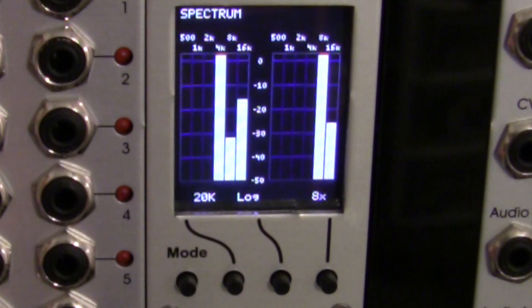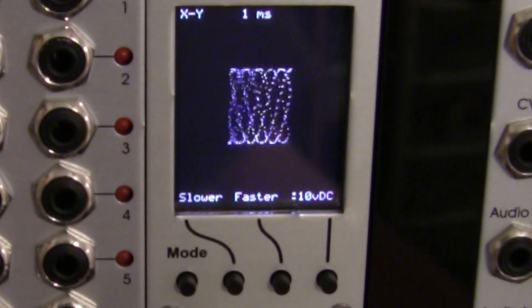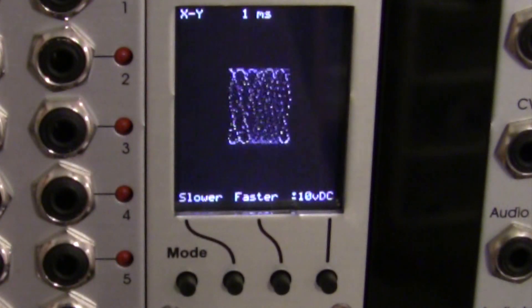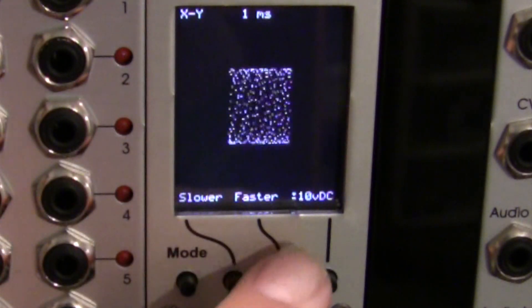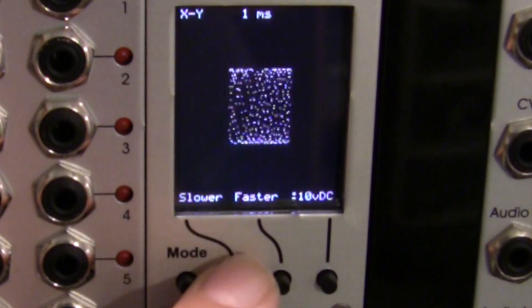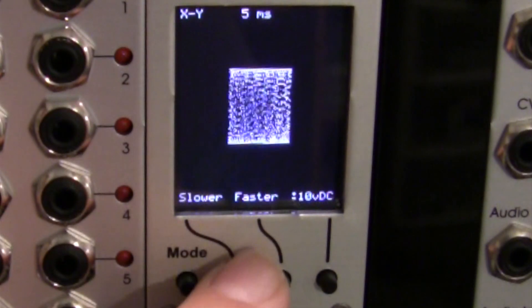And then you can kind of move through the modes until you see exactly what you want. So fairly straightforward and easy to use, which I like very much. Let's go into our next mode here. This is going to be our XY display, probably one of the most intriguing of these. So you can change slower, faster, obviously right here from our buttons.